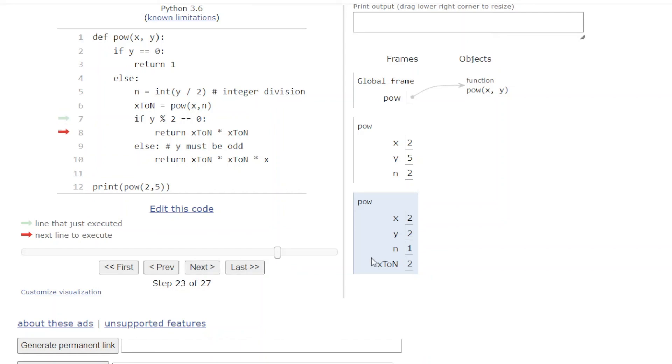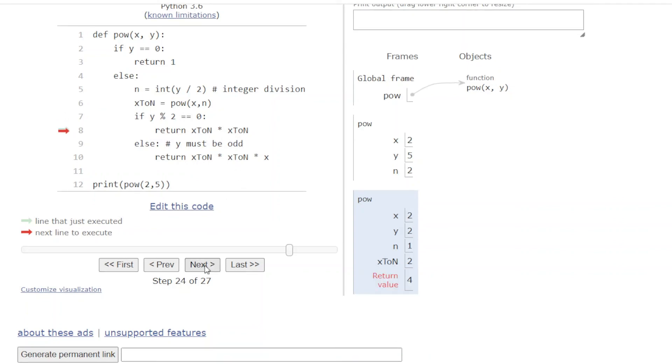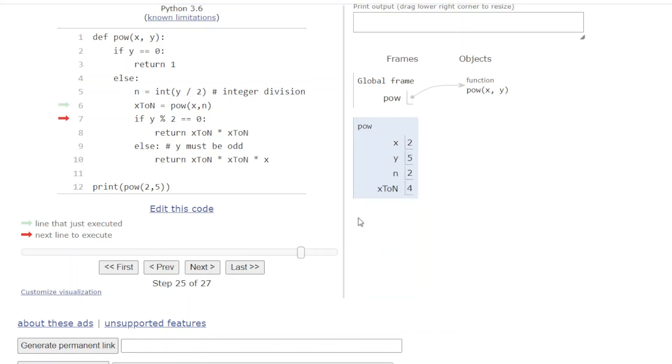We continue. This time, y is even, so instead we'll return x_to_n times x_to_n, so simply 2 times 2. So our return value is 4. And when I go to the next step, this frame will be eliminated, and we'll go up and store that value in x_to_n within the previous frame, as you can see here.